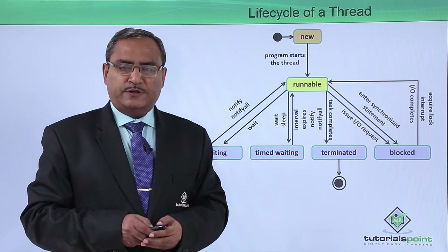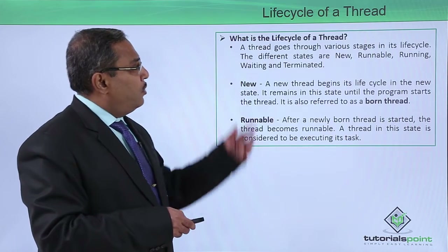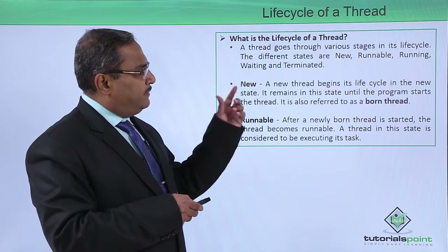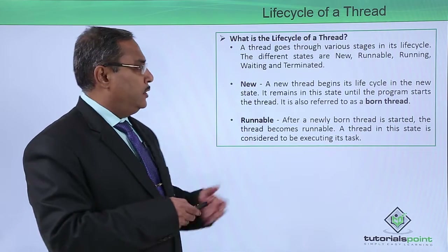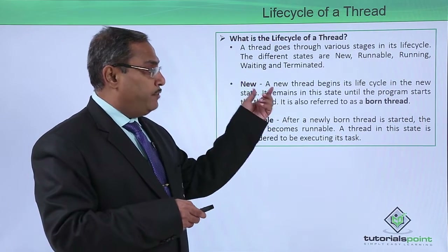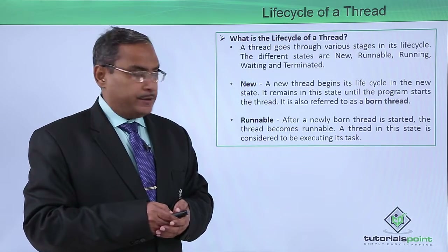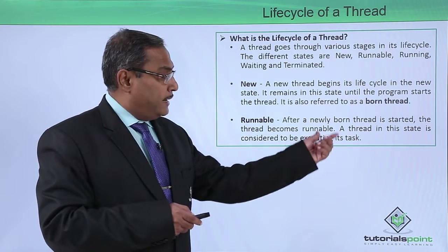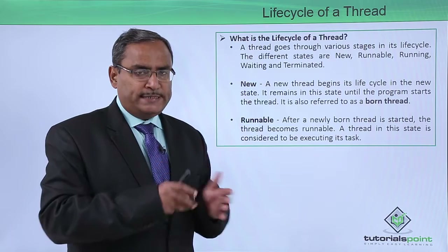Let us go through these respective states with more detail in the next slide. A thread goes through various stages in its life cycle: new, runnable, running, waiting, and terminated. A new thread begins its life cycle in the new state and remains there until the program starts the thread — it is also referred to as the born thread. After a newly born thread is started, it becomes runnable, and in this state it is considered to be executing its respective task.